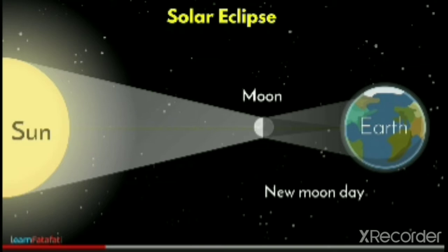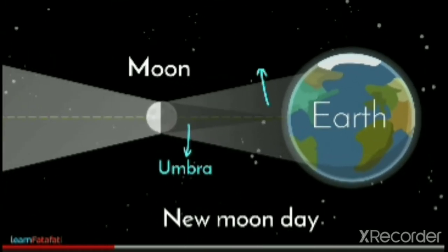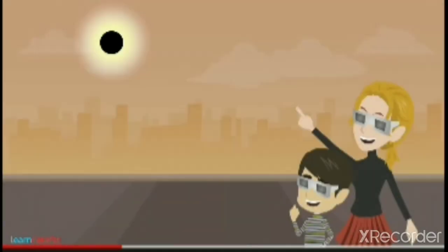There are two types of regions: umbra and penumbra. Umbra is the darker part and penumbra is the lighter part.